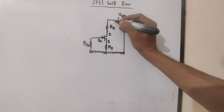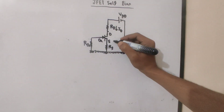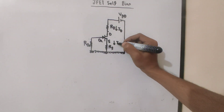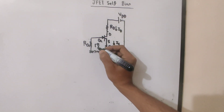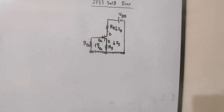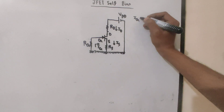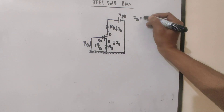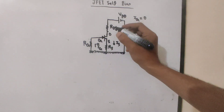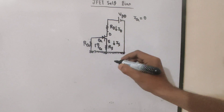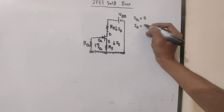We will find the drain current in DC analysis. The drain current ID equals the source current IS in this configuration. So the DC drain current and DC source current are equal.